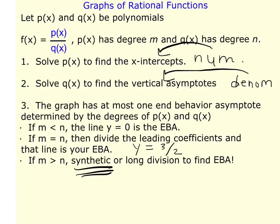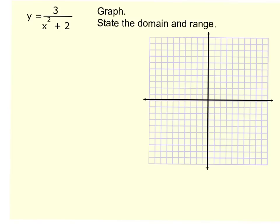I'm going to use these three steps in the next two graphs. The first graph is y = 3 divided by (x² + 2). Following the steps, the first thing I'll do is find the x-intercepts by solving the numerator. If I set the numerator equal to 0, there's no x to solve for, so there are no x-intercepts.